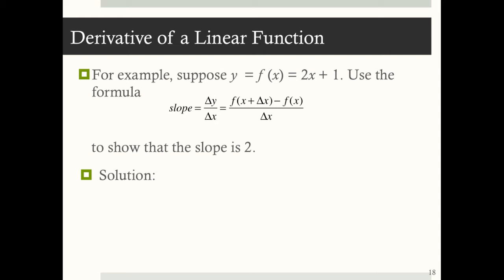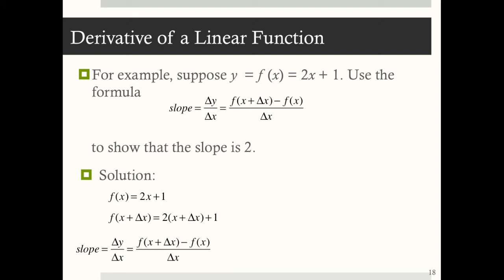For example, suppose y equals f(x) equals 2x plus 1. Let's use the slope formula to show that the slope is 2. We know f(x) equals 2x plus 1, and f(x + Δx) equals 2 times (x + Δx) plus 1. Plugging into the slope formula, I get [f(x + Δx) minus f(x)] divided by Δx, which simplifies to 2 times Δx divided by Δx, which equals 2. The slope of a linear function — the derivative — is a constant.